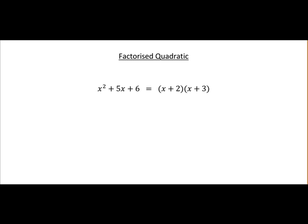Here's an example of what a factorized quadratic would actually look like. When you're finished factorizing x squared plus 5x plus 6, you'll end up with x plus 2 by x plus 3. So that's the answer you'll get at the end. That's what a factorized quadratic looks like.